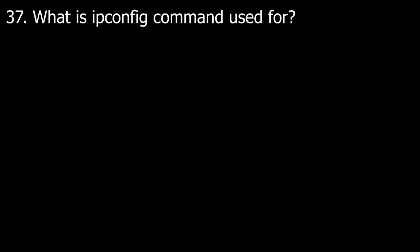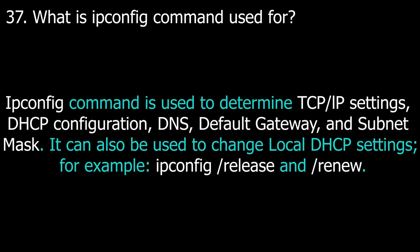Question number thirty-seven: what is the IPConfig command used for? IPConfig command is used to determine TCP/IP settings, DHCP configuration, DNS, default gateway, and subnet mask. It can also be used to change the local DHCP settings, for example ipconfig /release and /renew.